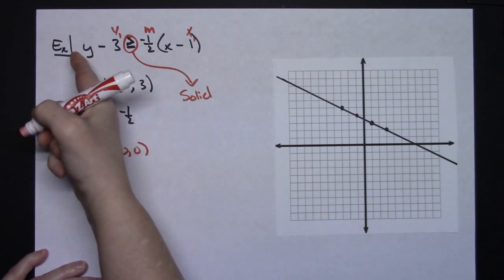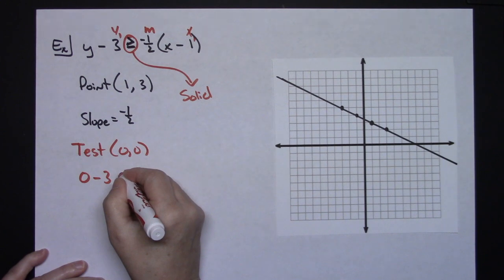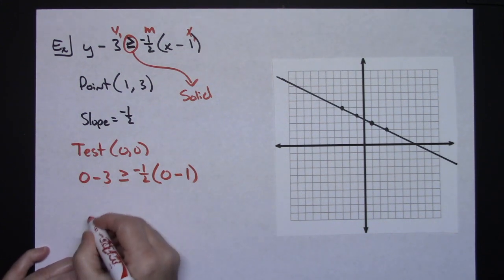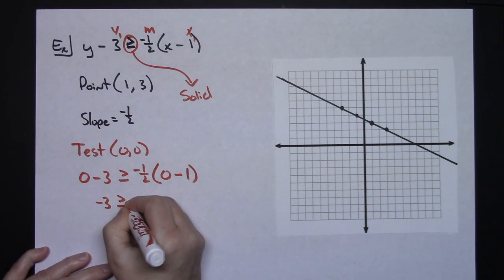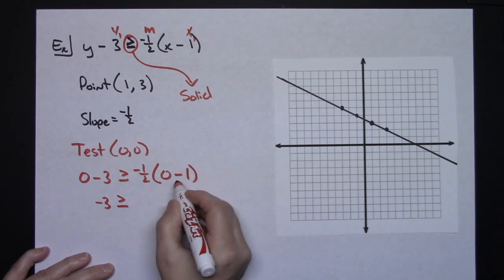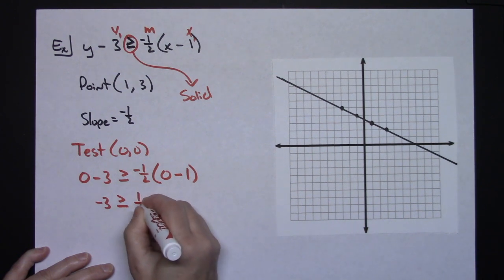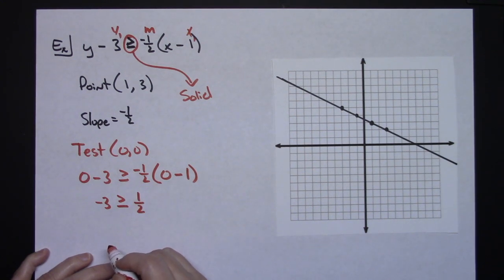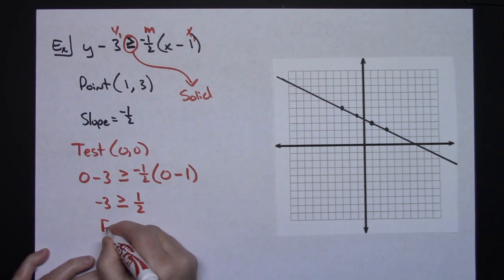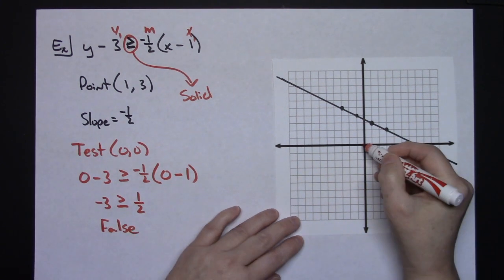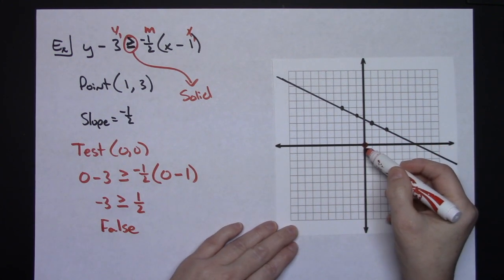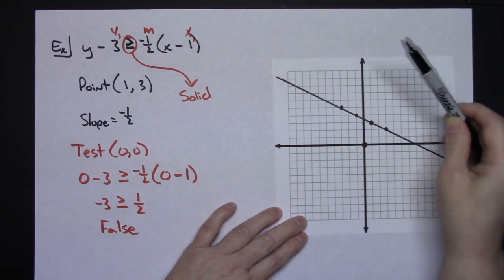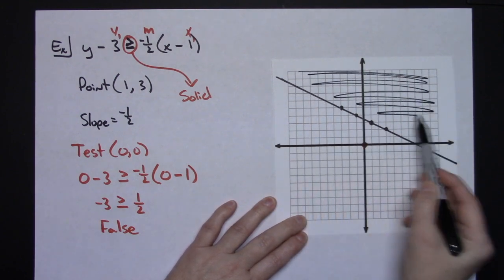Now I'll test the point (0, 0). Plugging in, I get 0 minus 3 is greater than or equal to negative one-half times the quantity 0 minus 1. That simplifies to negative 3 is greater than or equal to positive one-half. A negative number is not greater than or equal to a positive number, so this is a false statement. That means (0, 0) is not a solution, so none of the points on that side are solutions — I shade the opposite side of the line.